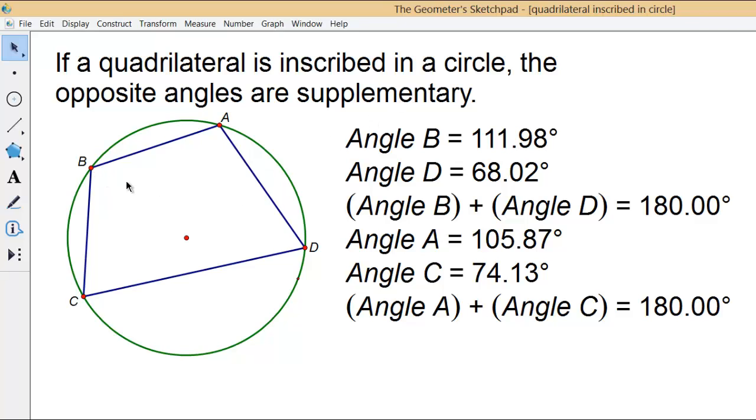Angle B and angle D are opposite angles. And those angles, when you add their measures together, will always be 180 degrees.